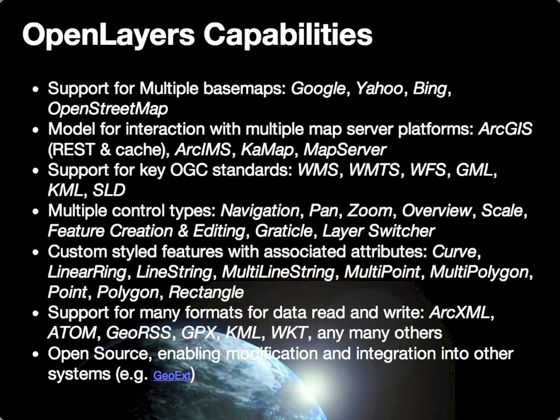Through that it actually supports a wide variety of geometry types, including curves, linear rings, line strings, multiple line strings, multi-points, multi-polygons, points, polygons, and rectangles. These are all feature types that you can define within the interface or programmatically, and that can be rendered within the map interface.